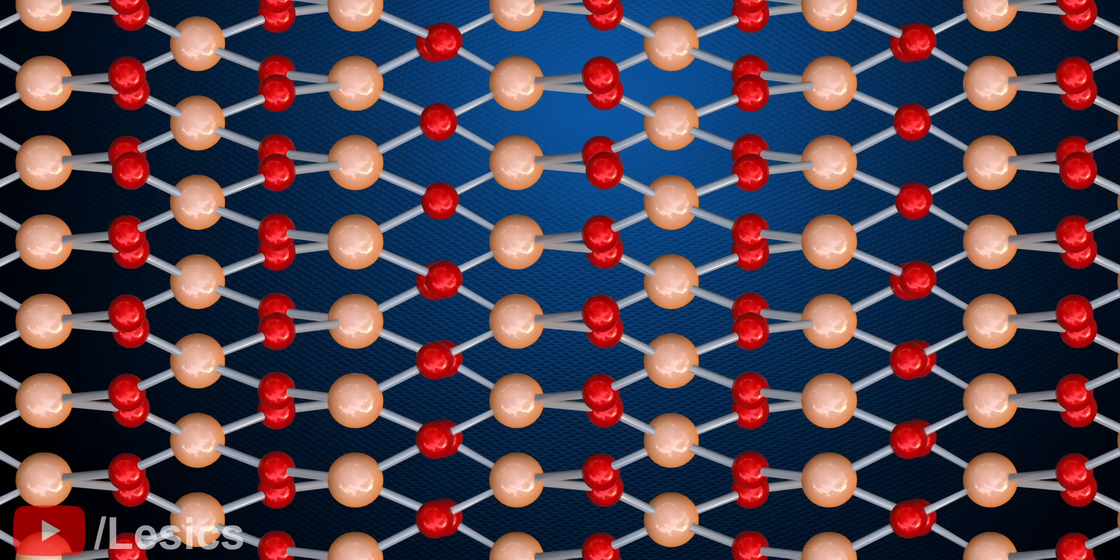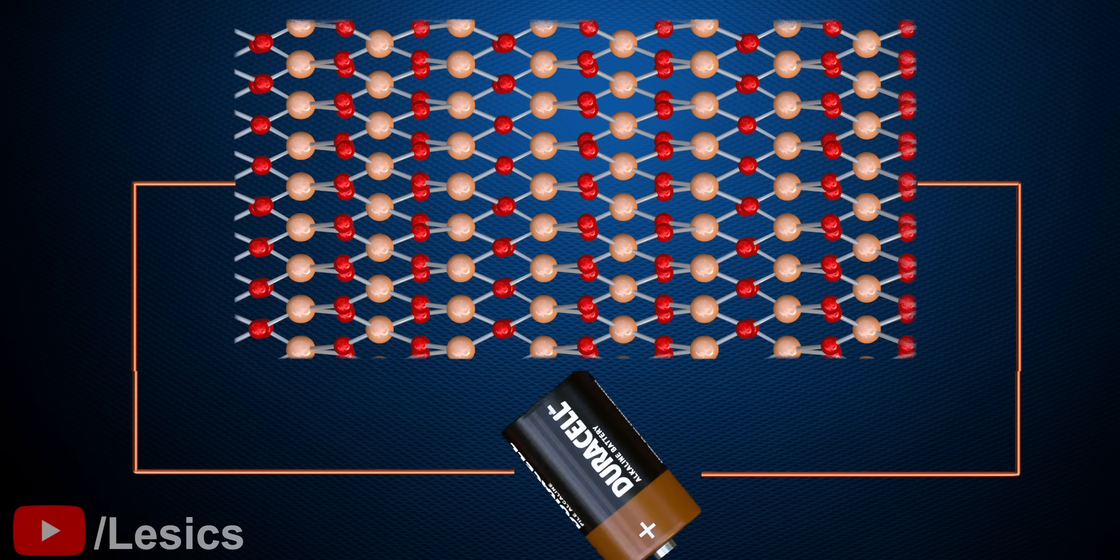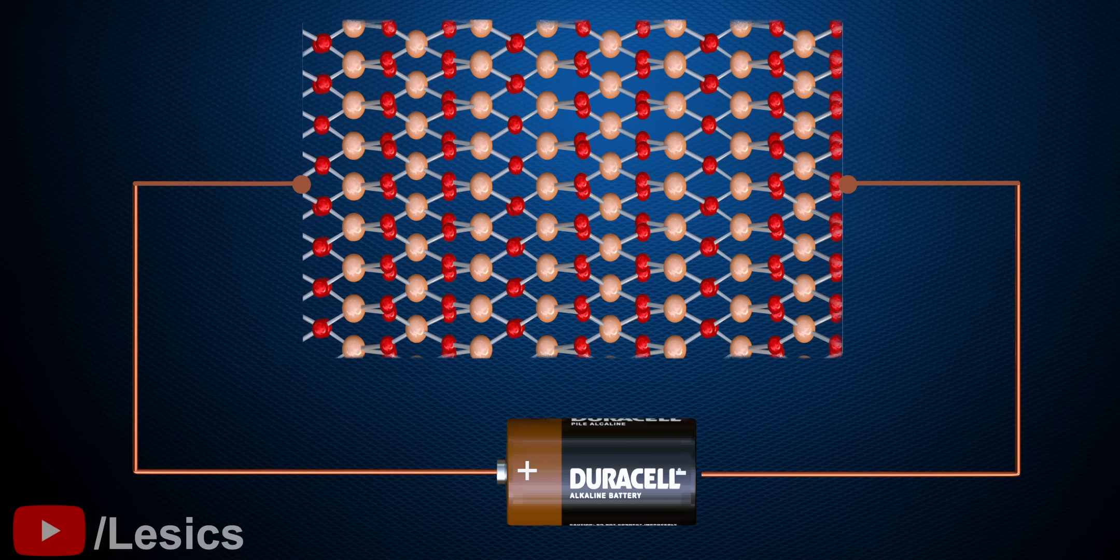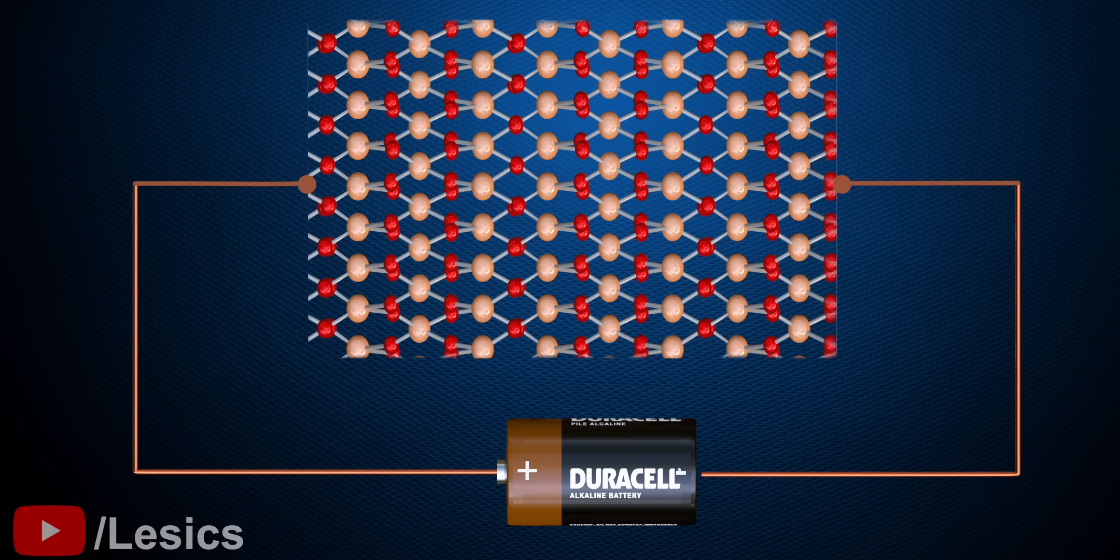Similarly, if the polarity of the voltage is reversed, the hexagon will get compressed. This stress or strain is transferred across the material, resulting in a net compression or expansion of the material.